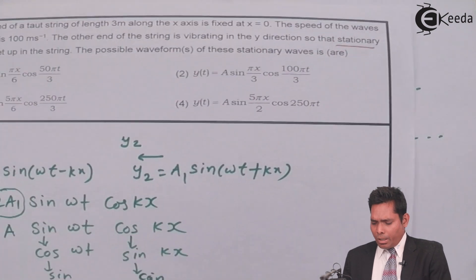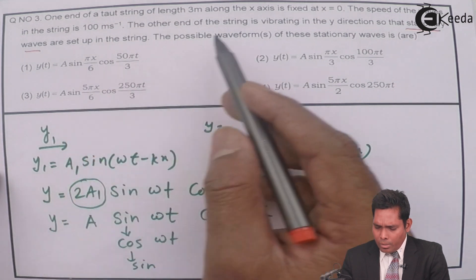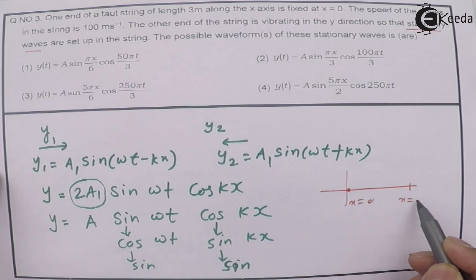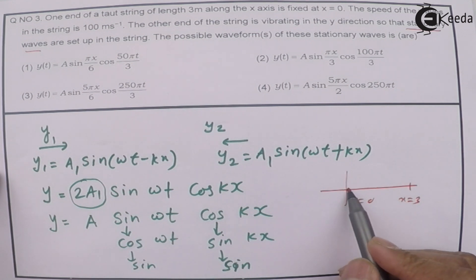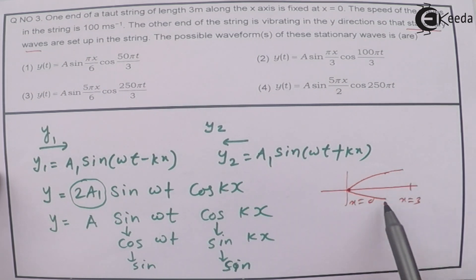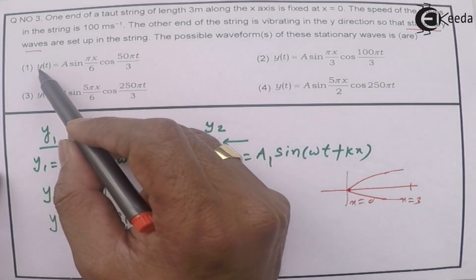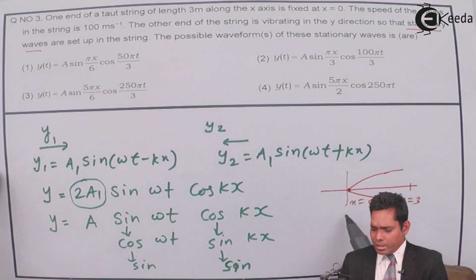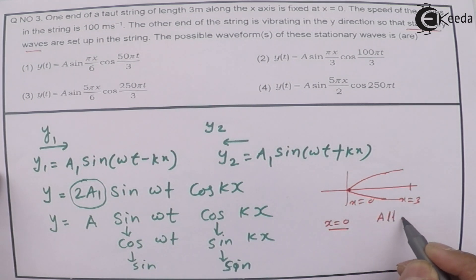We also note that at x = 0, there should be a node. If we put x = 0 in any of the stationary wave equations, y = 0, confirming it is a node. So as far as this node condition is concerned, for x = 0, all the given options satisfy the condition.